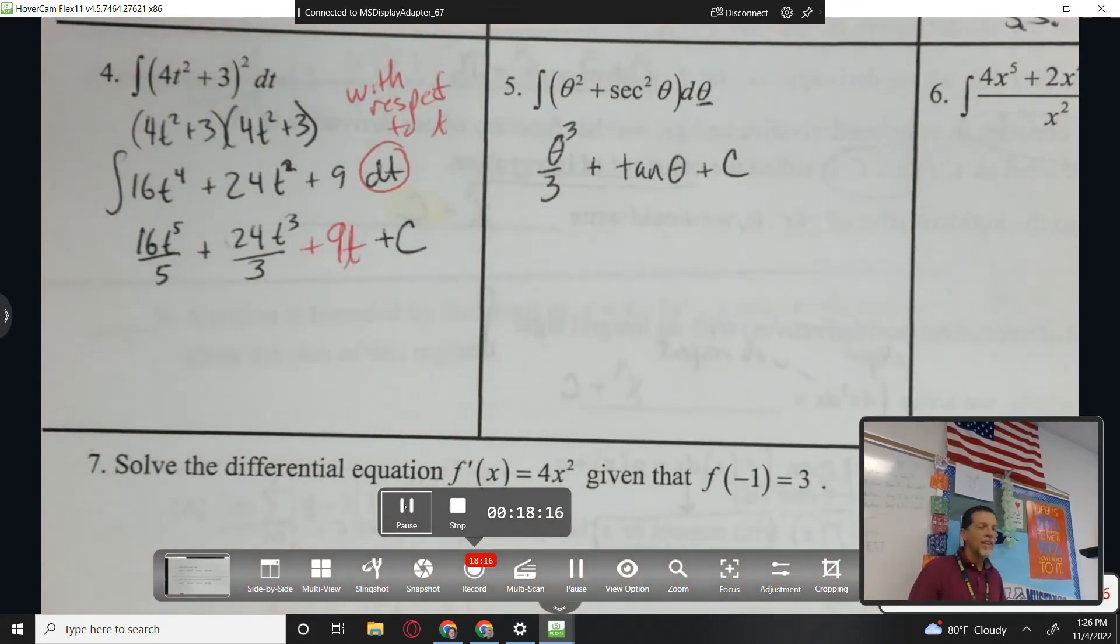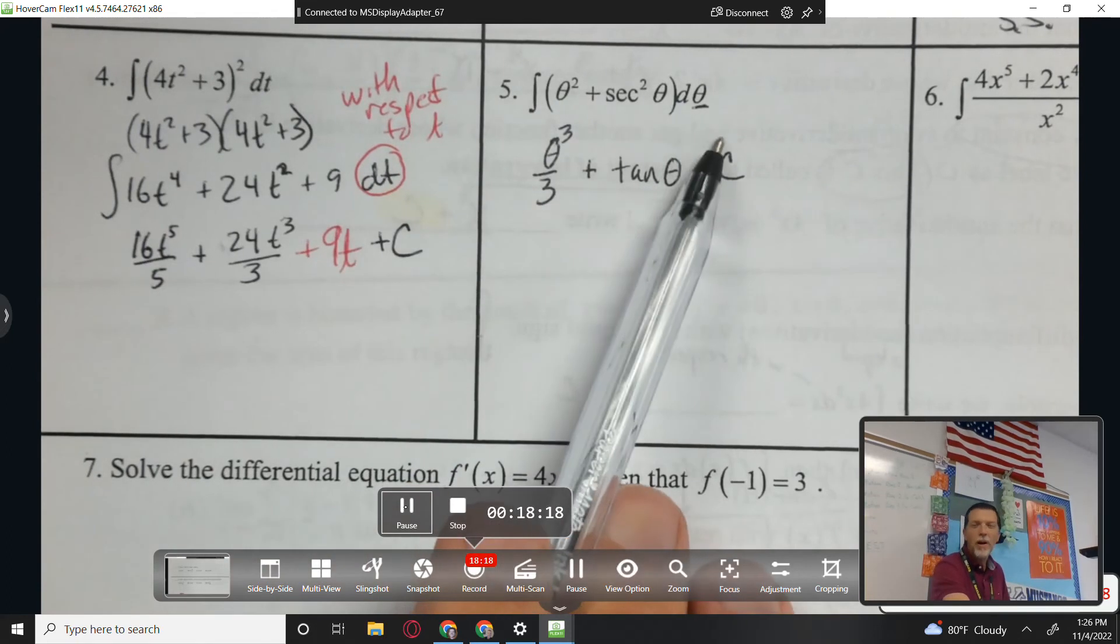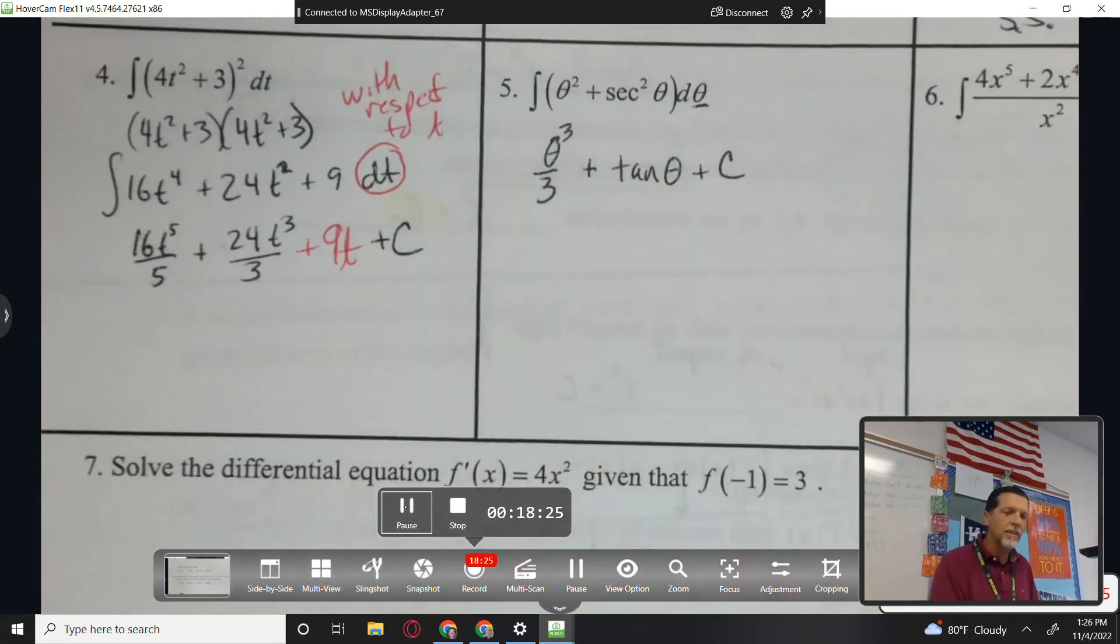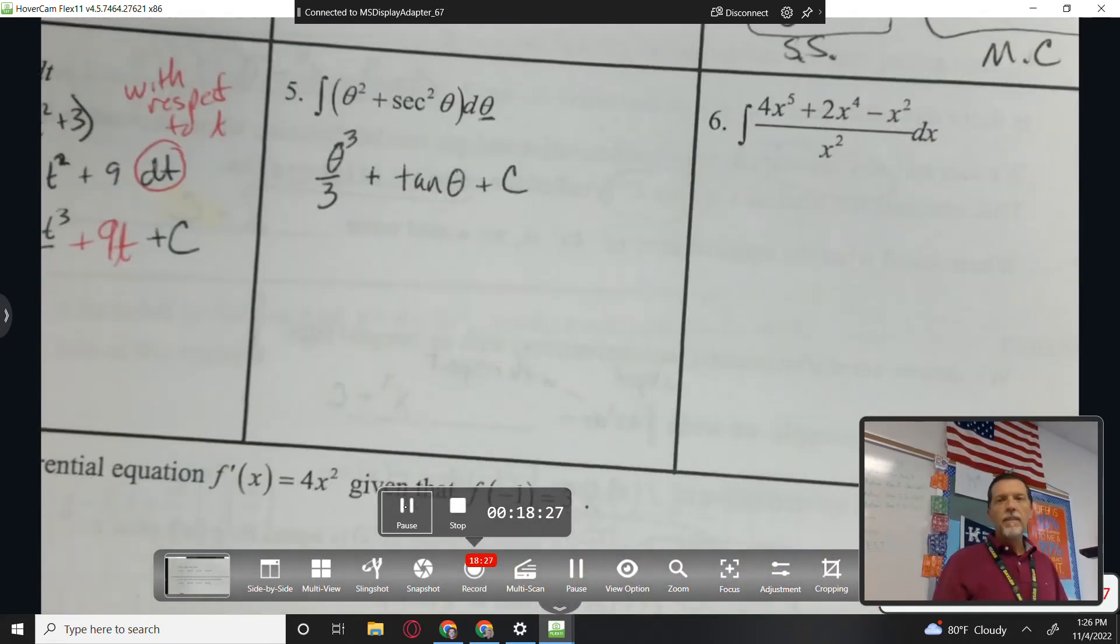Tangent plus c. So that's a tricky one, because we've been doing the power rule, and so you see a power and your brain immediately thinks, you know, up one and over the new power, but not here.